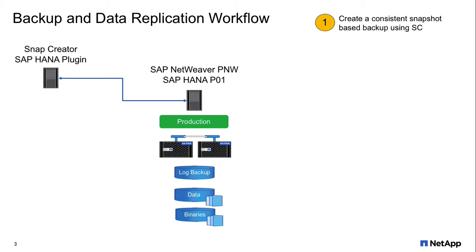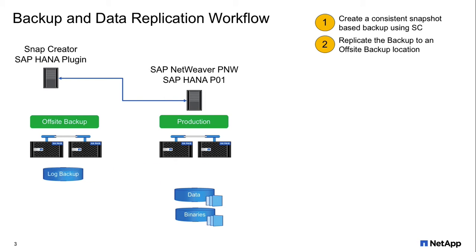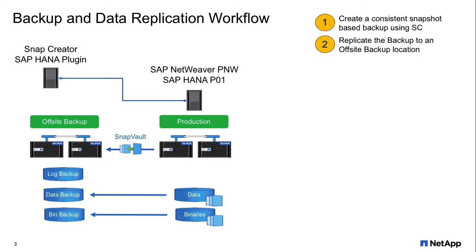It's not always a good idea to have the backups sitting on the production server. So in a second step, we can introduce an offsite backup on a second controller. We can move the log backups, which are the archival backups, from the production site to the offsite backup via an NFS share. We can also configure Snap Creator to automatically replicate all the backups from the production site to the offsite backup.